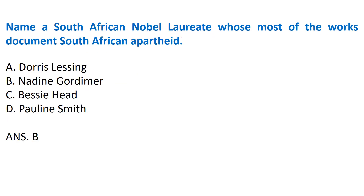Next question: 'Name a South African Nobel laureate whose most of the works document South African apartheid.' This is a question related to South African literature. The correct answer is Nadine Gordimer - she was the South African Nobel laureate whose most works were related to South African apartheid.